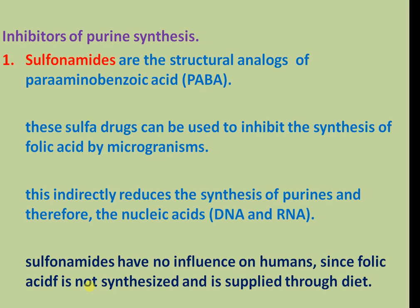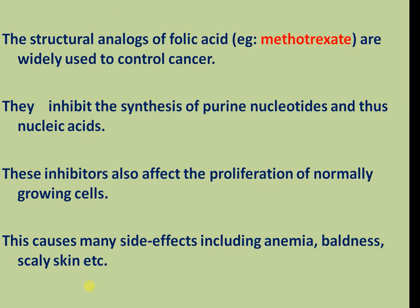Inhibitors of purine synthesis include sulfonamides, which are structural analogs of para-aminobenzoic acid. Sulfa drugs inhibit the synthesis of folic acid by microorganisms, which indirectly reduces synthesis of purines and therefore nucleotides DNA and RNA. Sulfonamides have no influence on humans since folic acid is not synthesized but is supplied through the diet. Structural analogs of folic acid such as methotrexate are widely used to control cancer by inhibiting the synthesis of purine nucleotides, though they also inhibit proliferation of normally growing cells, causing side effects including anemia, baldness, and scaly skin.